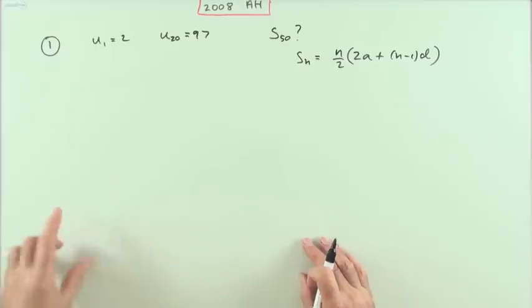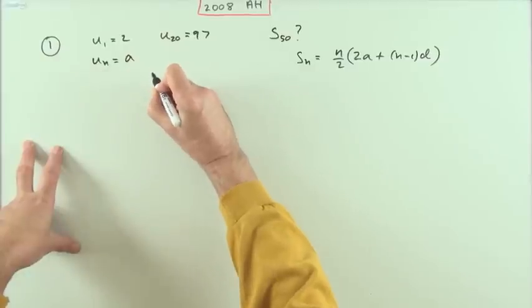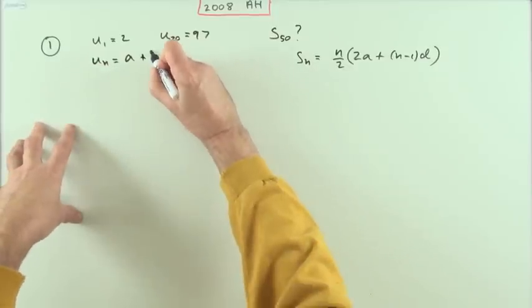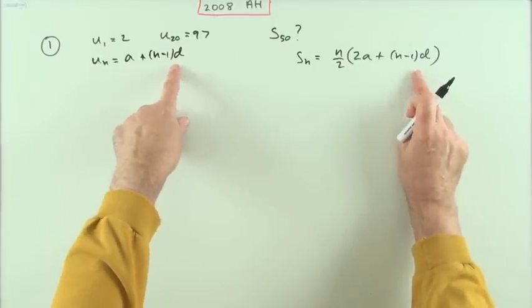What's the common difference? I'll get that from here, because the nth term is simply: you start with the first term and you add on the common difference, and by the nth term you'll have added on n minus 1 of them.